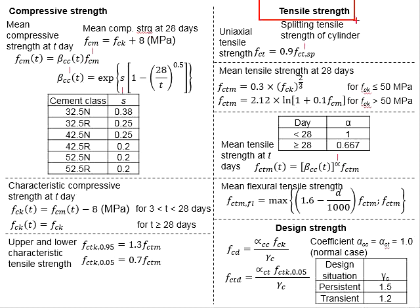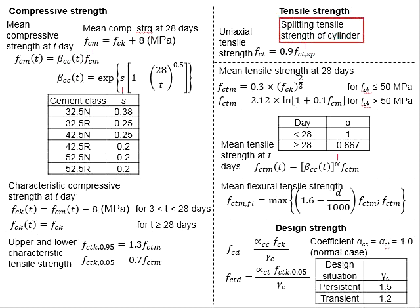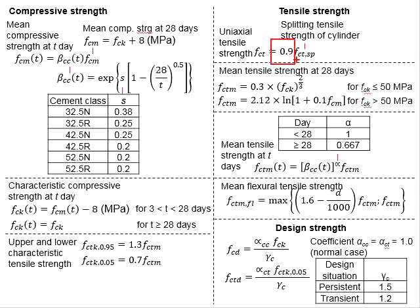Next, we look into the tensile strength of concrete. FCT represents the uniaxial tensile strength, while FCT_SP represents the splitting tensile strength of a cylinder. Based on the result of the splitting tensile strength of the cylinder, multiplied with a factor of 0.9, it is considered as the uniaxial tensile strength.